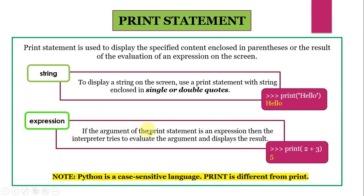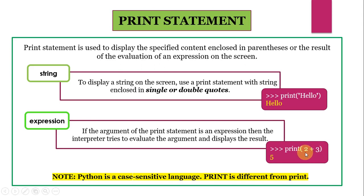Now if the argument of the print statement is an expression, then the interpreter tries to evaluate the argument and then display the result. For example, if I write print and then within parenthesis 2 plus 3, then it will first evaluate this — that is, it will add 2 to 3 — and then the result of the evaluation is displayed on the screen.